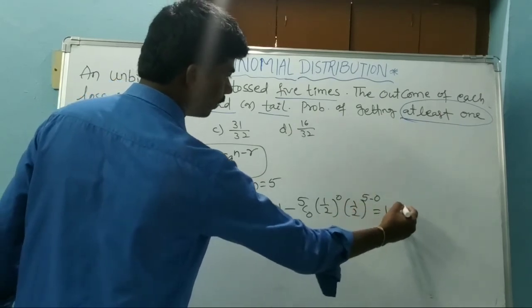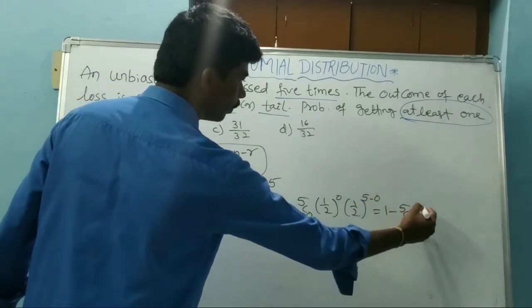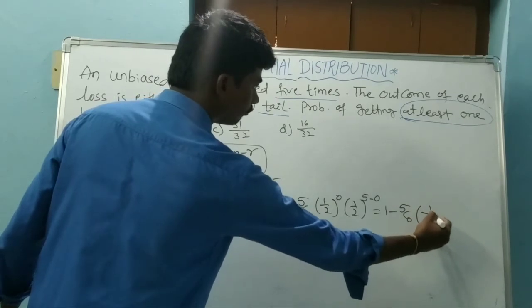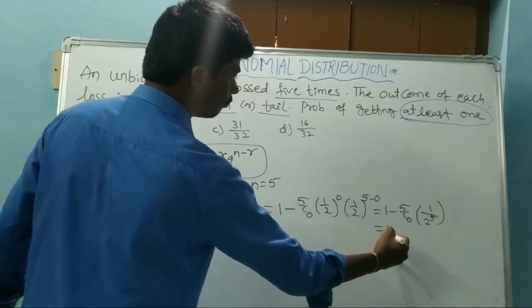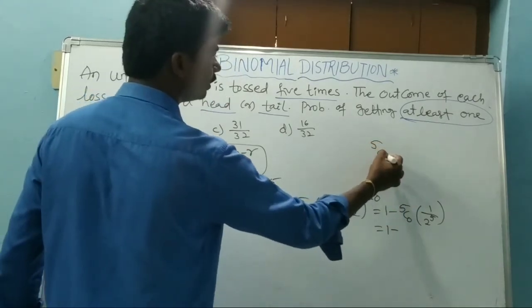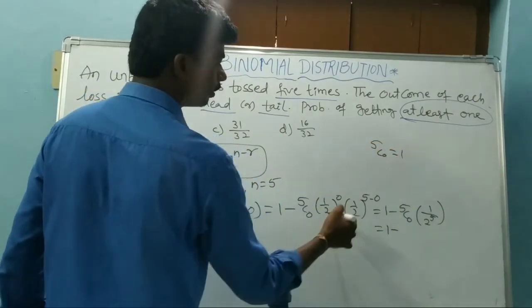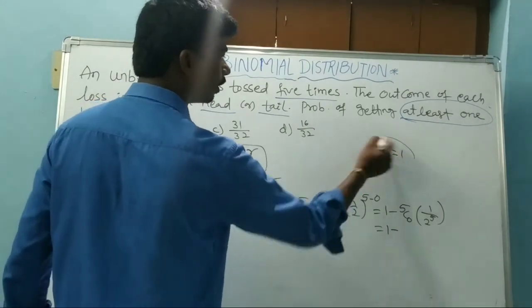One by two over five. Five C zero. One by two to the power of five. Now that equals what is that? One minus five C zero. Five C zero equal to one. Something power zero, that is also one.